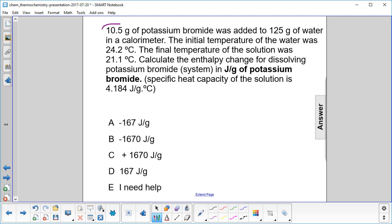We are adding 10.5 grams of potassium bromide to 125 grams of water. So what's our total mass there? We have to add those two numbers together. And what do we get? We get 135.5 grams. So that's our total mass.